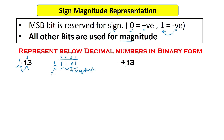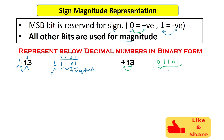Now let's take another example: plus 13, a positive number. Again we represent 13 in binary — 8 plus 4 plus 1 equals 13, so the magnitude bits are 1101. Since the number is positive, we put 0 at the MSB. So 01101 is positive 13 in sign magnitude representation. The only difference between minus 13 and plus 13 is the sign bit; the magnitude bits are the same.